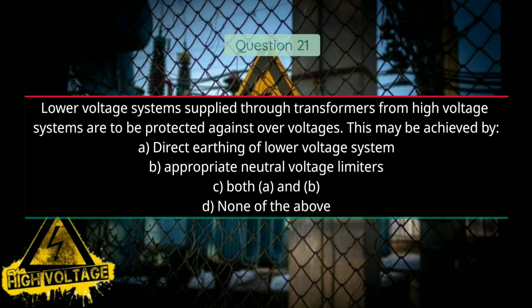Question twenty-one: Lower voltage systems supplied through transformers from high voltage systems are to be protected against over-voltages. This may be achieved by — Option A: direct earthing of lower voltage system, Option B: appropriate neutral voltage limiters, Option C: both A and B, and Option D: none of the above. Answer for this question is C, both A and B.